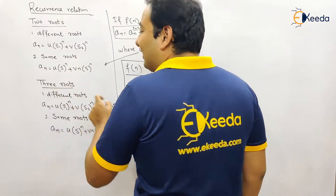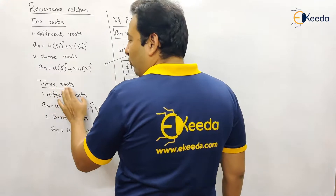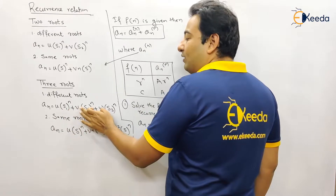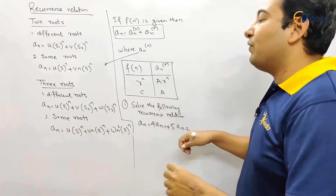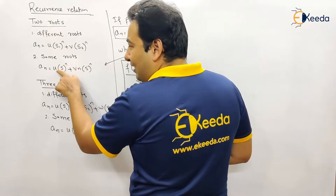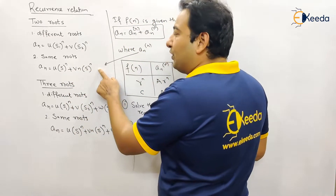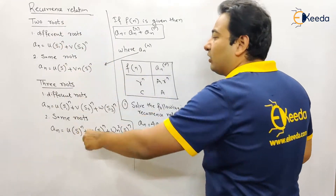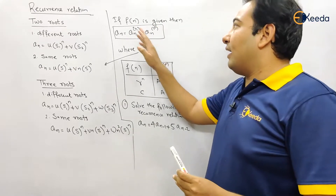Suppose there are three different roots s1, s2, s3 — the solution extends to a_n = u·s1^n + v·s2^n + w·s3^n. If there is only one repeated root, the solution becomes a_n = u·s^n + v·n·s^n + w·n²·s^n, where the powers of n are n^0, n^1, and n^2 respectively.